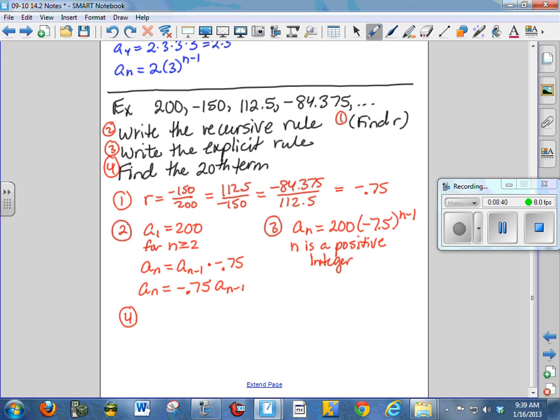So for finding the 20th term, I would say a sub 20 is equal to 200 times, and I wrote the decimal place in the wrong place there. I apologize, you're probably screaming half point by now. Negative 0.75 to the 19th. Now this is a messy number. Use your calculator. And I confess that I don't have a calculator handy, so I'm going to pause for just a second, calculate that, and write the answer down so that you can check yours.